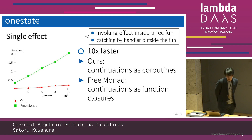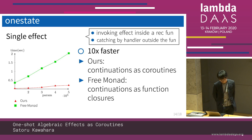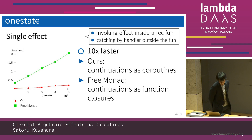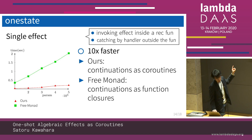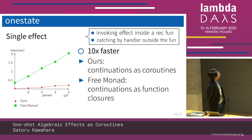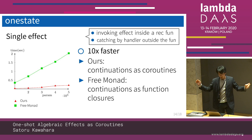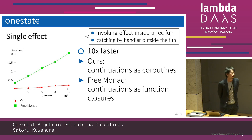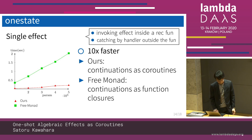We show the detail of each benchmark. The first benchmark, 'one-state,' is the case of a single effect. This program invokes an effect inside a recursive function, and the effect is caught by the handler outside the function. The result is 10 times faster than the free monad. Our library manages continuation as coroutines, whereas the free monad requires continuations as function closures, which creates significant overhead at runtime — so we win.